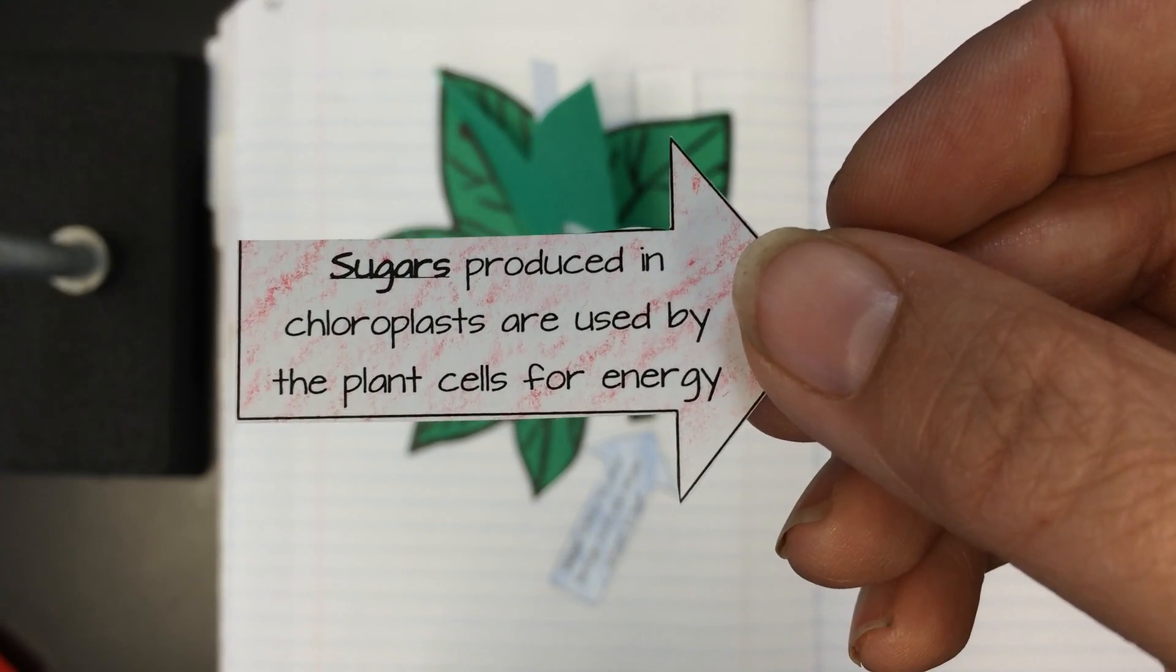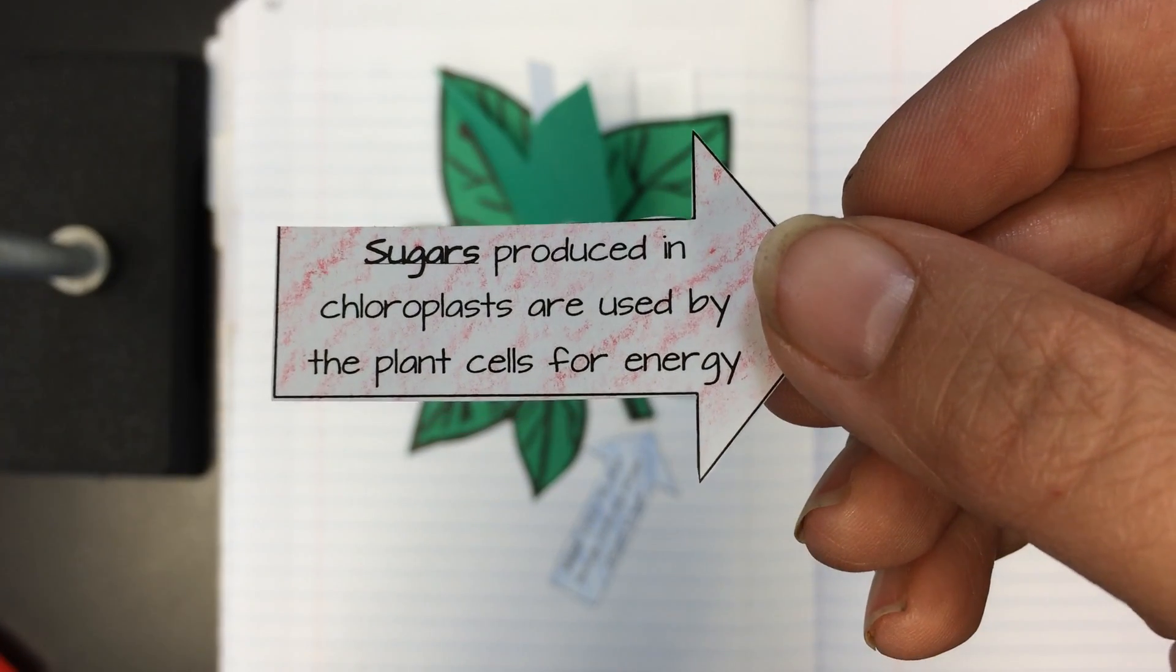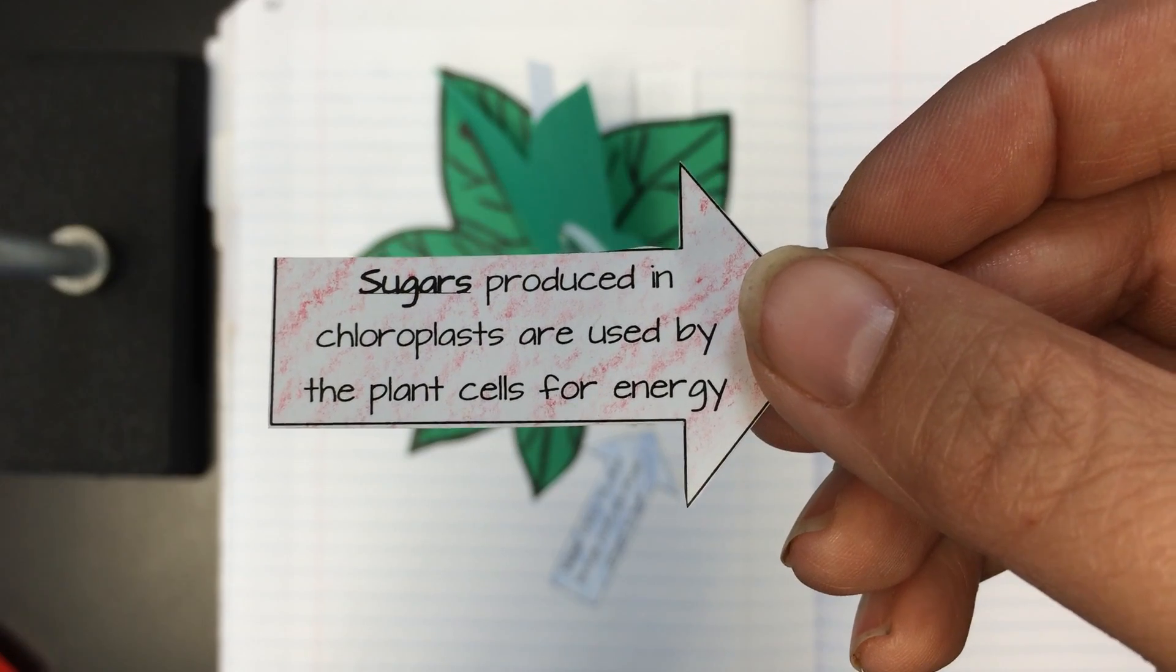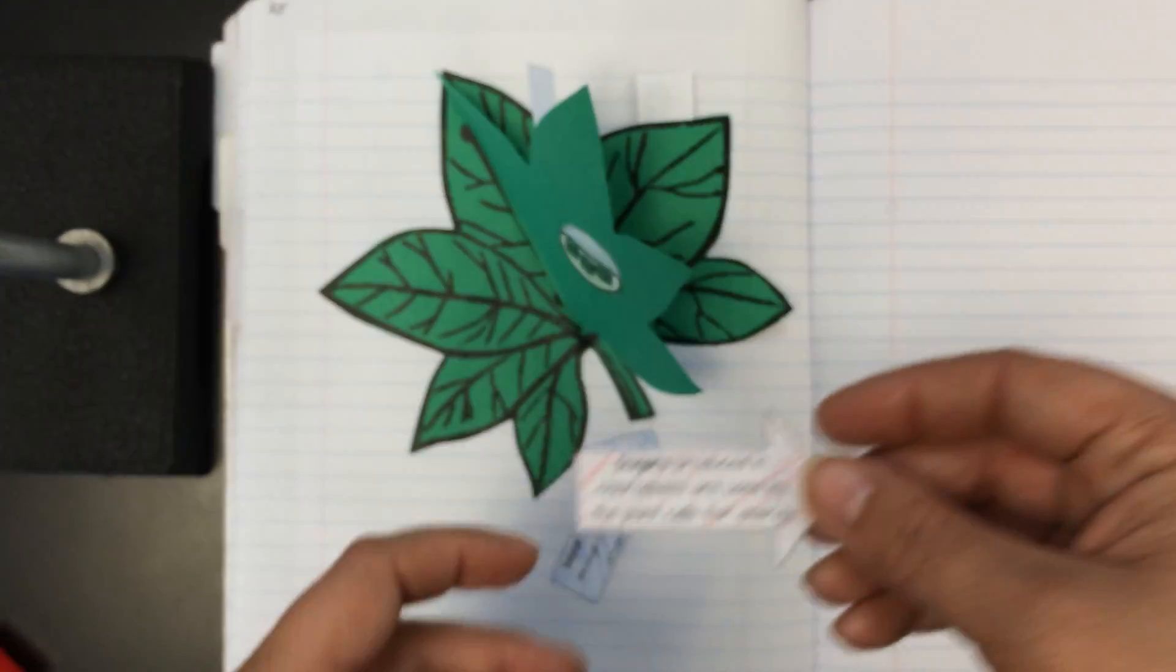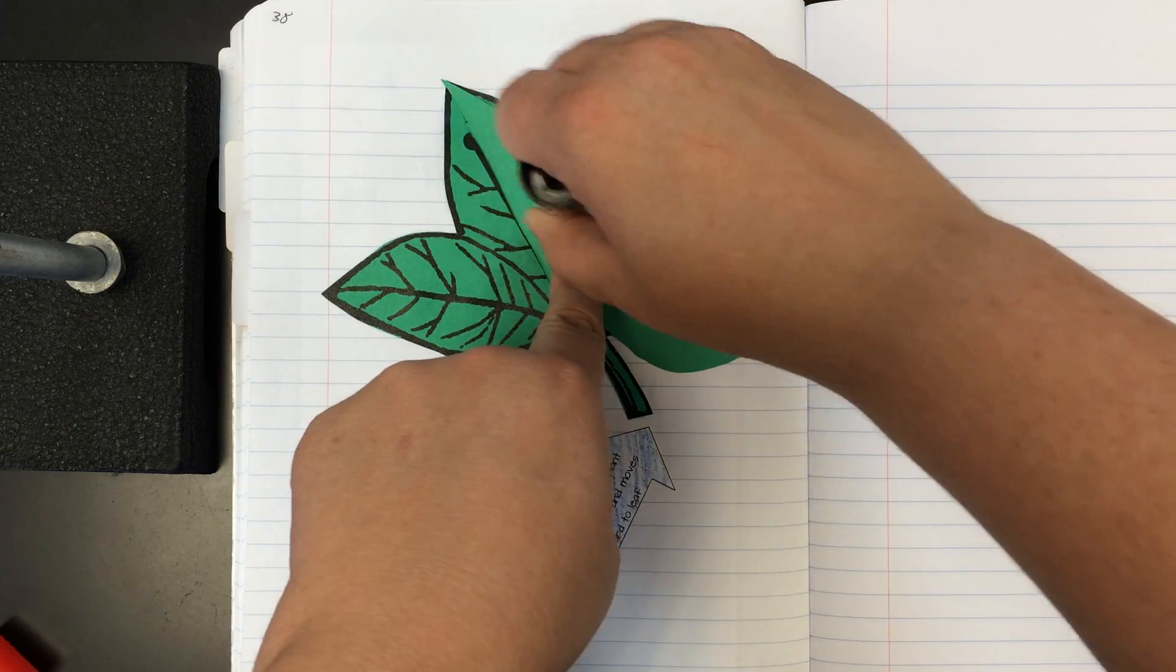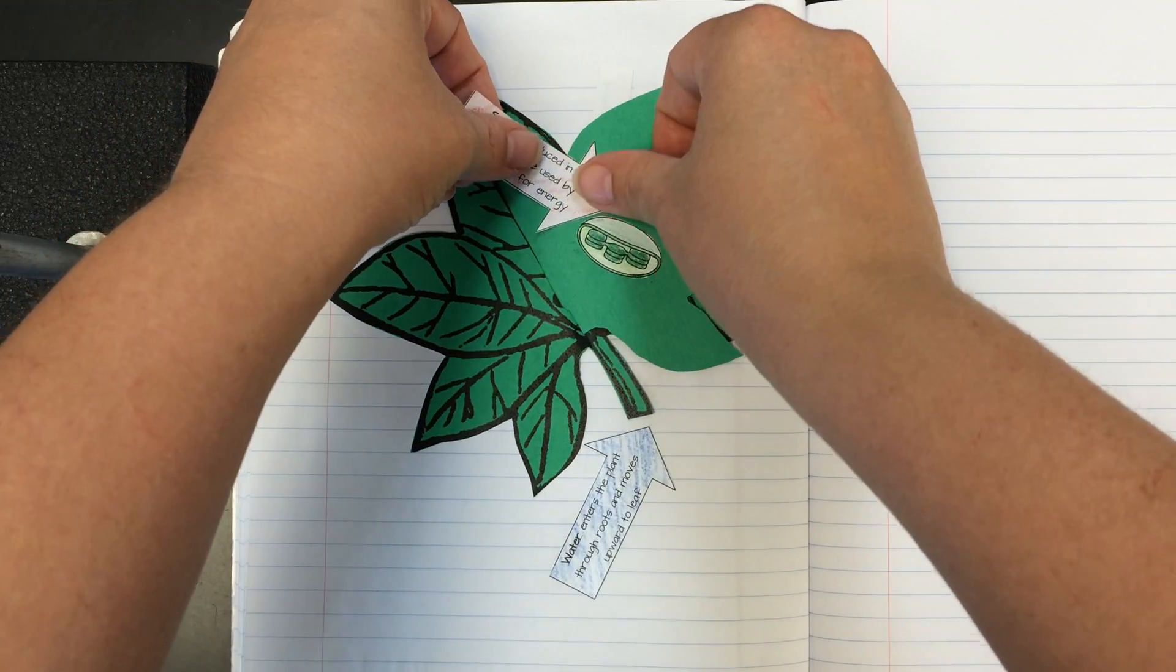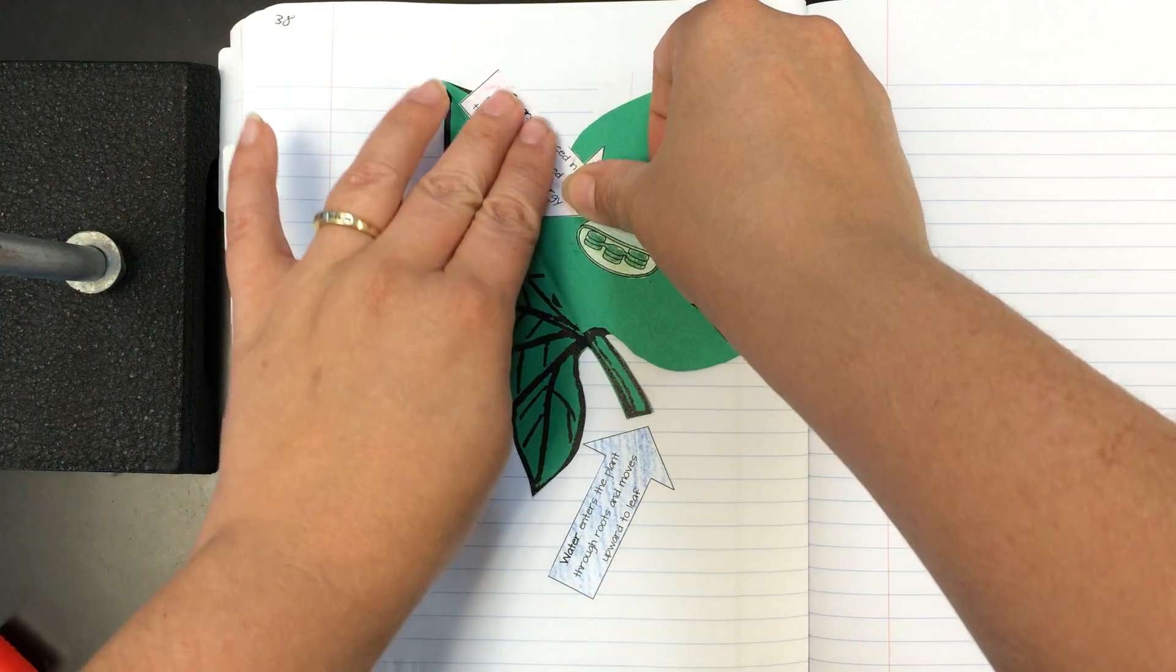Sugars produced in chloroplast are used by the plant cells for energy. So this arrow is going to be pointing to our chloroplast, which is in the middle of our plant cell. So I'm going to put a little glue right here for my sugar arrow showing the job of my chloroplasts.